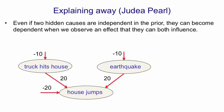So if you see the house jump, one plausible explanation is that a truck hit the house. A different plausible explanation is that there was an earthquake. And each of those has a probability of about e to the minus 10, whereas the house jumping spontaneously has a probability of about e to the minus 20.